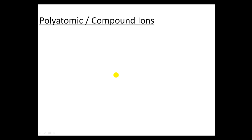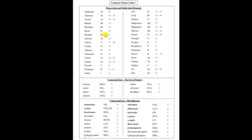In this video tutorial, we'll be looking at the nomenclature for polyatomic ions, also known as compound ions — both words are interchangeable. If you look at the common valence sheet, parts 1 and 2 of our video clips have been dealing with the monovalent and multivalent elements at the top portion. This video will be dealing with the compound ions at the bottom portion.